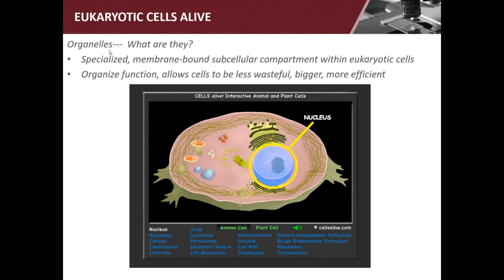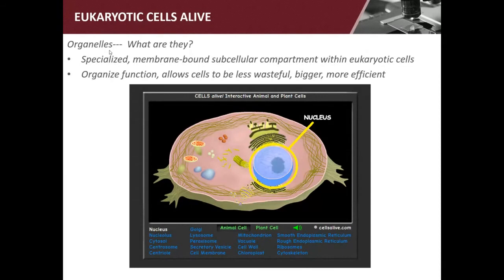Let's answer some true or false questions. True or false: all eukaryotic cells have a nucleus? True, right. True or false: all eukaryotic cells have a cell wall? False — because animal cells do not. True or false: the DNA in a bacteria cell is in the nucleus? False again — because bacteria don't have a nucleus. They have DNA, but it's not in the nucleus; it's just floating in the cytoplasm.